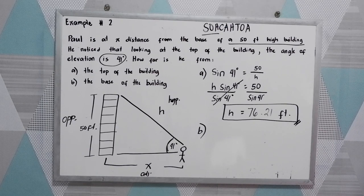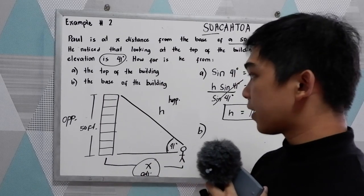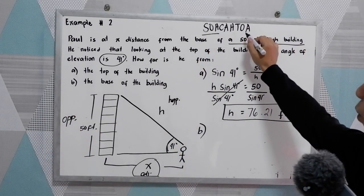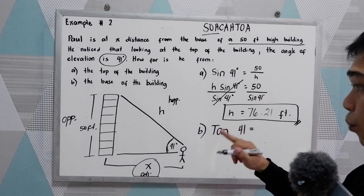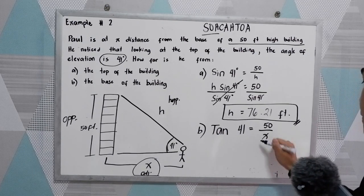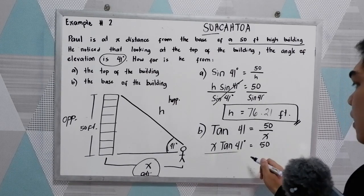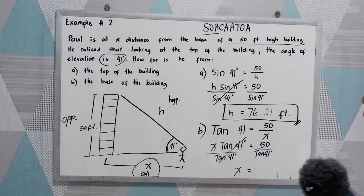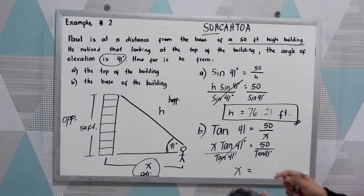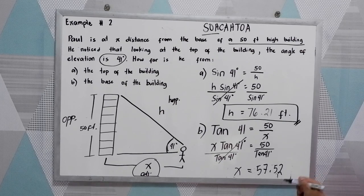For letter B, we find X — the distance from Paul to the base of the building. The given are opposite (50 feet) and adjacent (X), so from SOH-CAH-TOA we use the tangent function. Tangent of 41 degrees equals 50 over X. Cross multiplying, X times tangent 41 degrees equals 50. Dividing both sides by tangent 41 degrees gives X equal to 50 divided by tangent 41, which equals 57.52 feet.